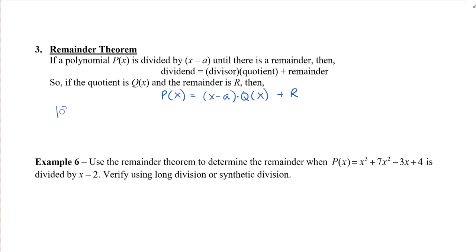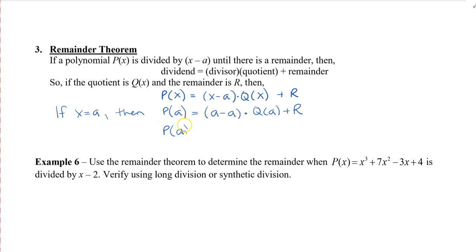If x is equal to a, then P(a) equals (a minus a) times Q(a) plus R. Since a minus a is 0, and 0 times anything is 0, we get P(a) equals R. This means that if I take the divisor number — the a value — and plug it into the polynomial, I actually get the remainder.